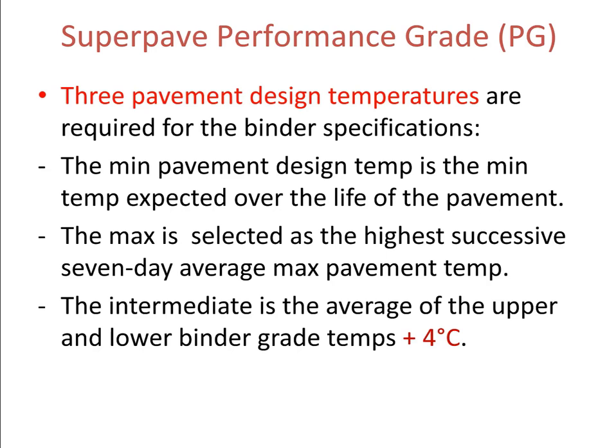Performance grade testing used to characterize the asphalt binder is usually performed at different temperatures to represent the upper, middle, and lower ranges of the surface temperatures. Three different pavement design temperatures are required for the binder specifications. The minimum pavement design temperature is the minimum temperature expected over the entire life of the pavement. The maximum temperature is selected as the highest successive seven-day average maximum temperature. The intermediate temperature is the average of the upper and lower temperatures plus four degrees Celsius.